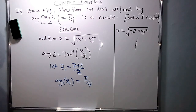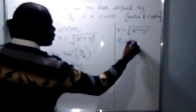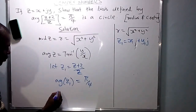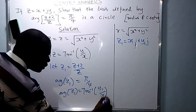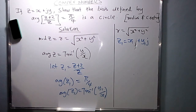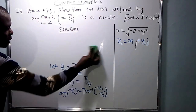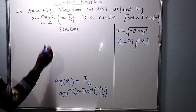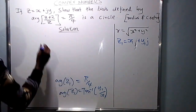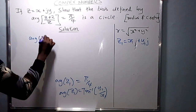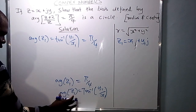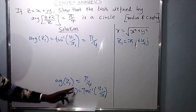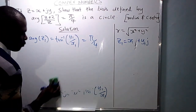So if you let (Z+2)/Z be Z1, then we have argument of Z1 equals π/4. By definition of argument, argument of Z1 is tan inverse of Y1 over X1 if Z1 is X1 plus Y1·J. So tan inverse of Y1 over X1 equals π/4. Taking tan inverse to the other side, Y1 over X1 equals tan(π/4), which is 1.